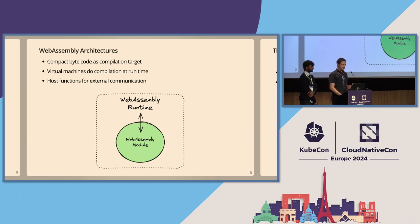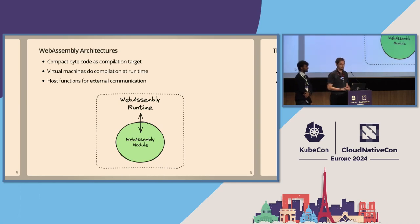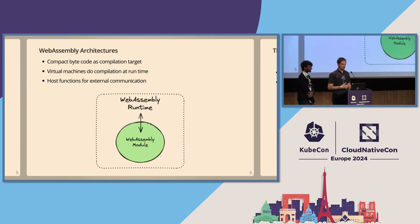For example, you can write a plugin in Rust, compile it to WebAssembly, and embed it in a Go application. WebAssembly runtimes also offer fairly strong sandboxing, so in some cases we can even run untrusted code as extensions to our applications.